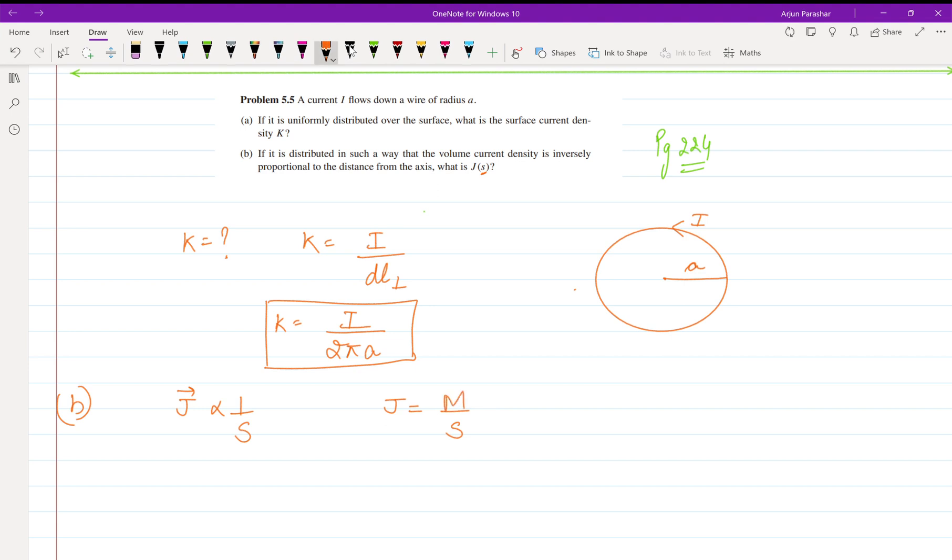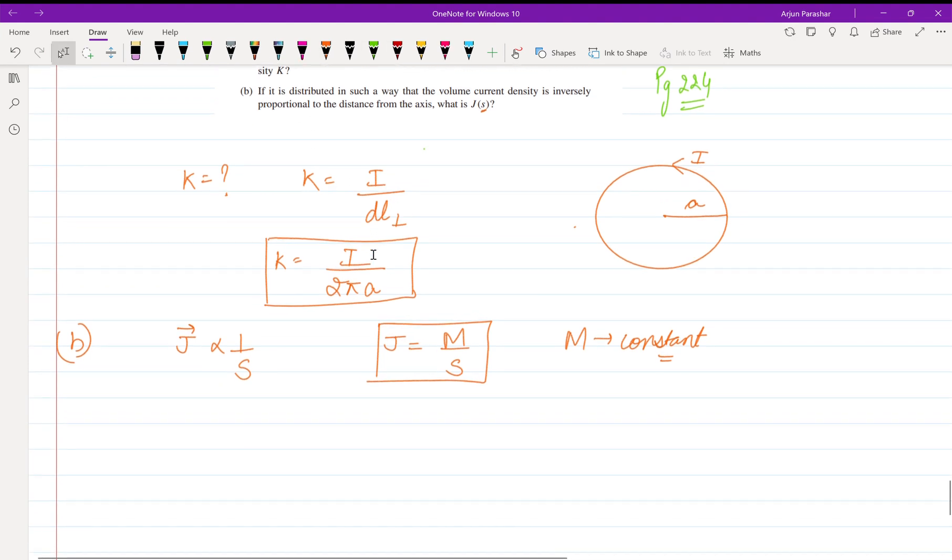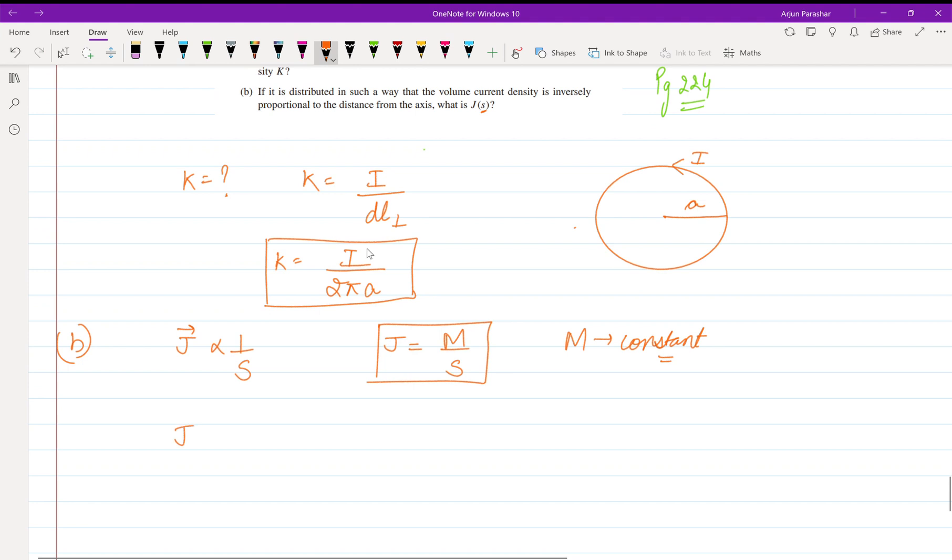All right, so what we need to find: we need to find what is J. So to find J we have S, we need M. All right, so as you know that I is equal to integral J·dA perpendicular.